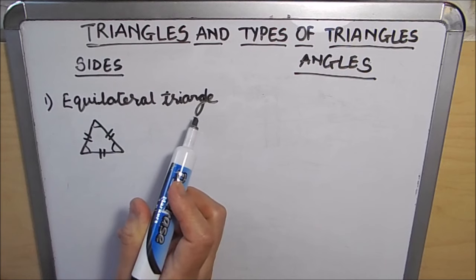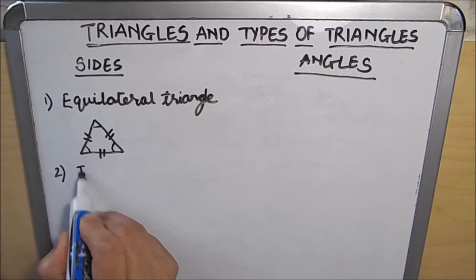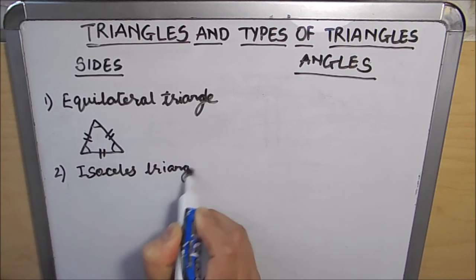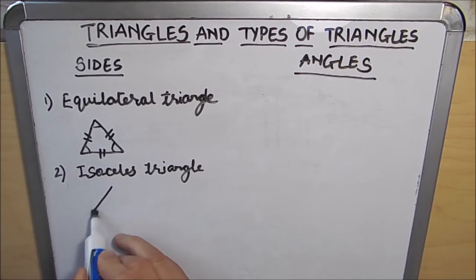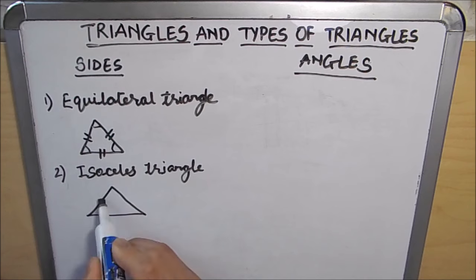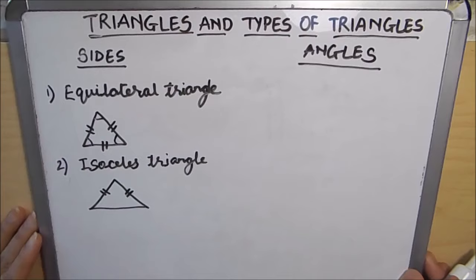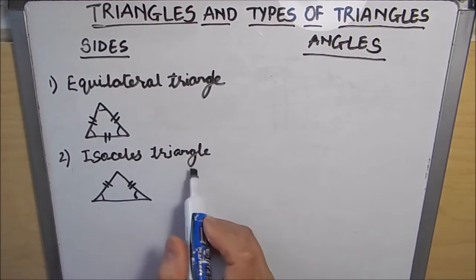The next one is the isosceles triangle. An isosceles triangle is a triangle having two sides equal. If two sides of a triangle are equal, it is called an isosceles triangle.